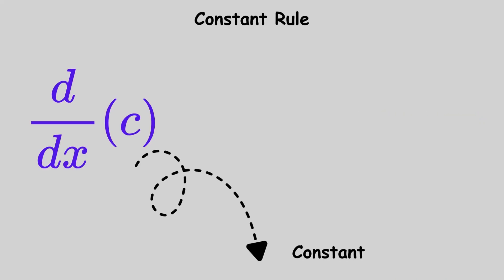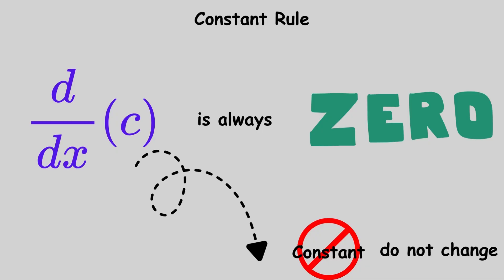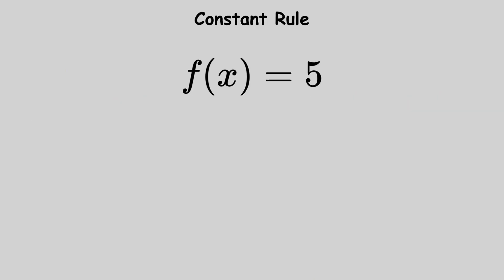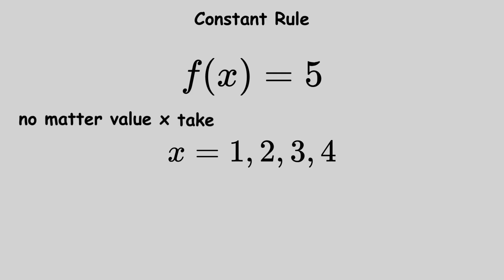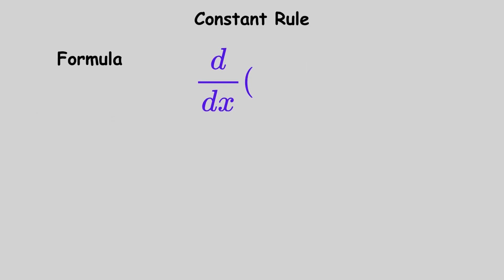The constant rule states that the derivative of any constant is always zero because constants don't change. When you have a function like f of x equals 5, no matter what value x takes, the output is always 5. Since there's no change, the rate of change is zero. The formula is: the derivative with respect to x of c equals zero.